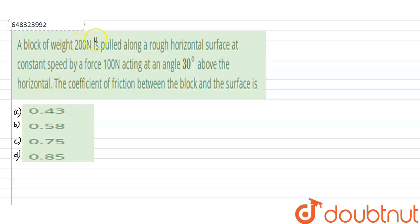Hello everyone, so the question is: a block of weight 200 N is pulled along a rough horizontal surface at a constant speed by a force of 100 N acting at an angle of 30 degrees above the horizontal.